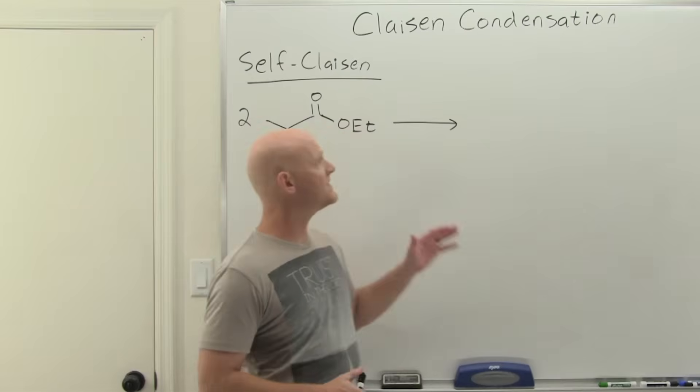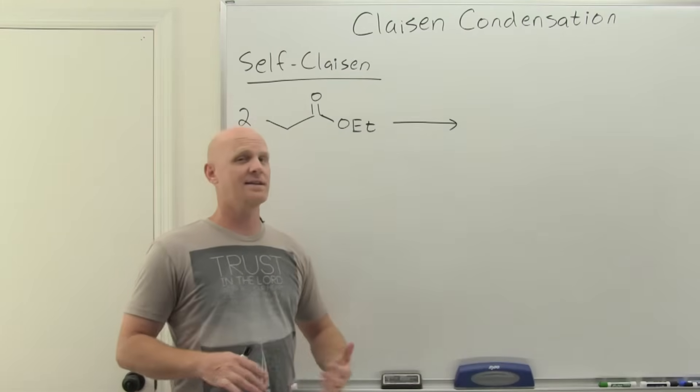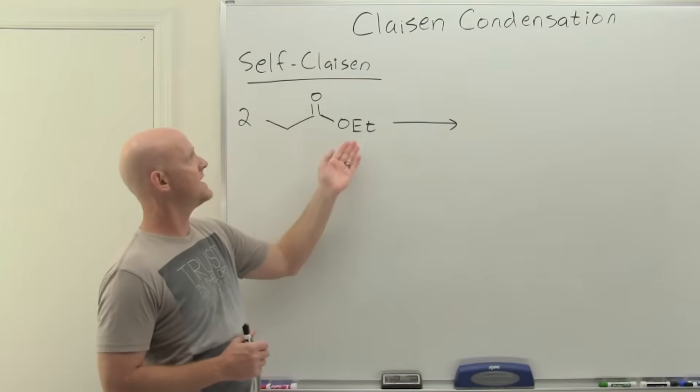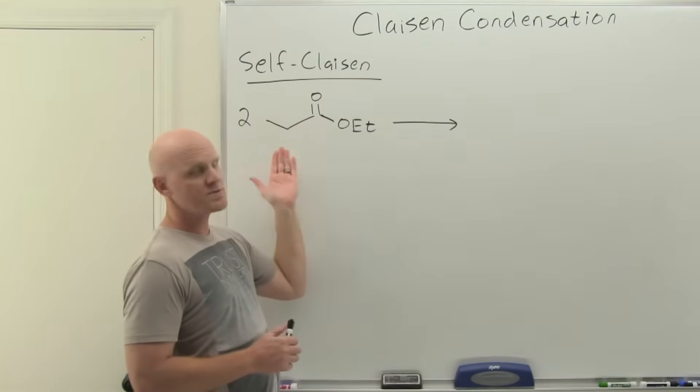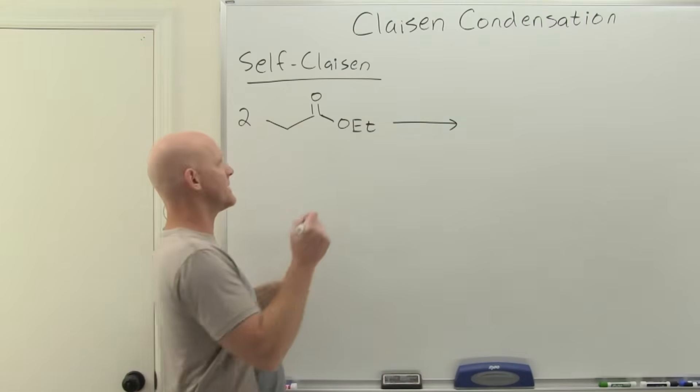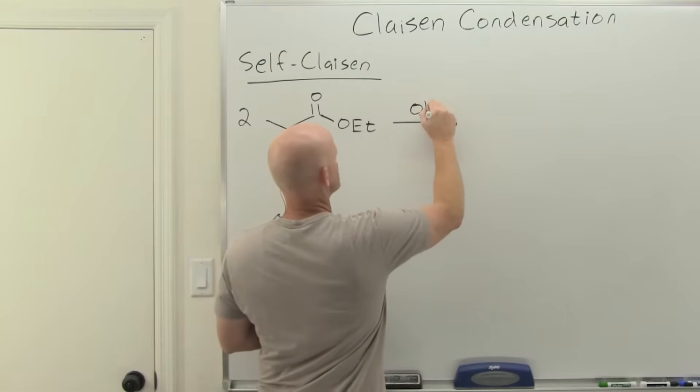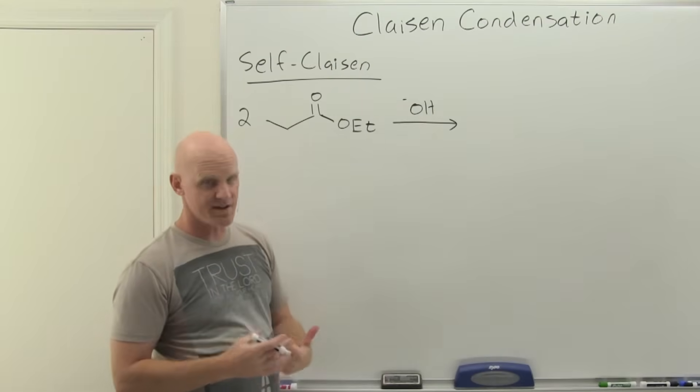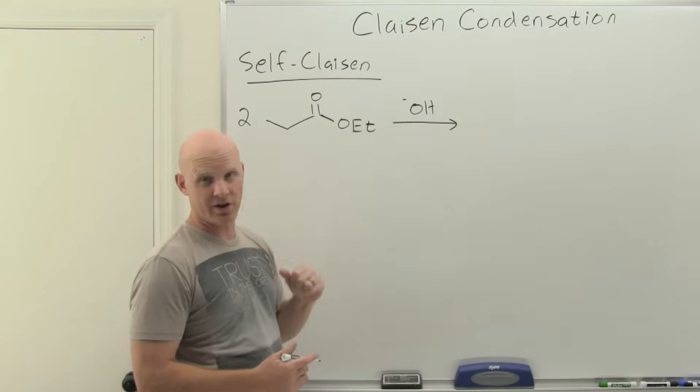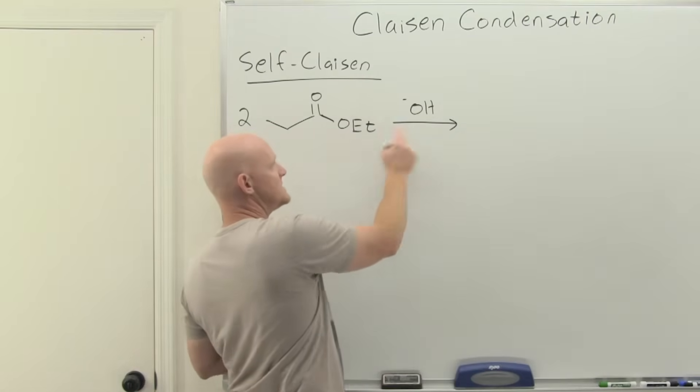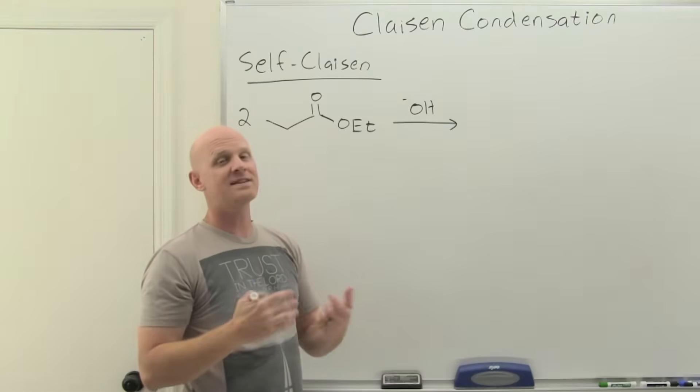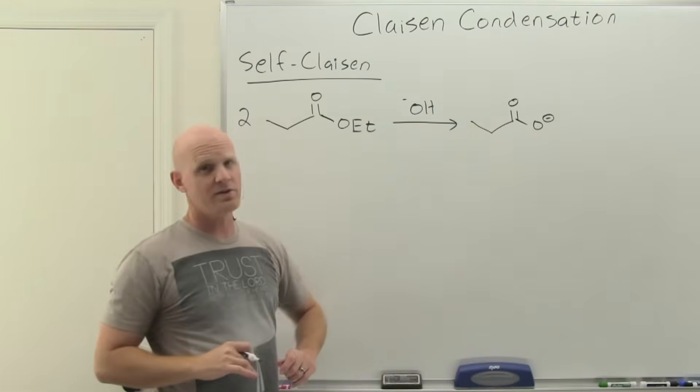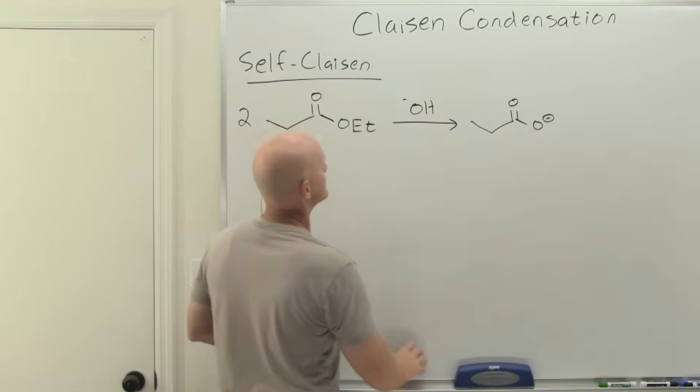The Claisen condensation is only ever base catalyzed, but you've got to be very careful on what you choose for your base. Here I've got ethyl propanoate. We can't just pick any old base. If we use hydroxide, it will do basic hydrolysis of the ester and convert it to a carboxylate, and that's not what we're trying to do. So we can't use hydroxide as a base.